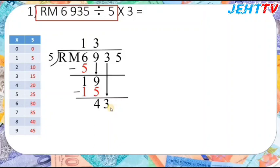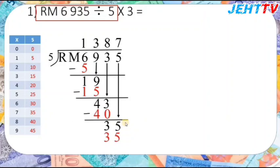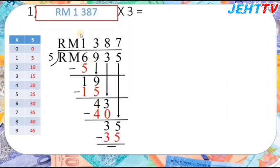Bring down the 3 to get 43. We don't have 43 in the 5 times table, but we have 40 — 5 times 8 equals 40. Then 43 minus 40 equals 3. Bring down the 5 to get 35. Yes, 5 times 7 equals 35, and 35 minus 35 is 0, so the division is finished. RM6,935 divided by 5 equals 1,387.